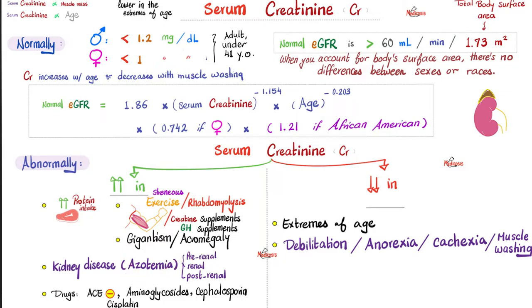Kidney diseases can increase serum creatinine big time. Whether it's pre-renal azotemia, intra-renal azotemia, or post-renal azotemia, all of them will increase my serum creatinine. Also, some medications might elevate my serum creatinine, probably because they can decrease my kidney function. These include ACE inhibitors, aminoglycosides, cephalosporins, and cisplatin, very toxic to the kidney.